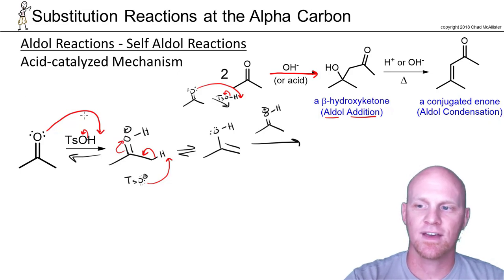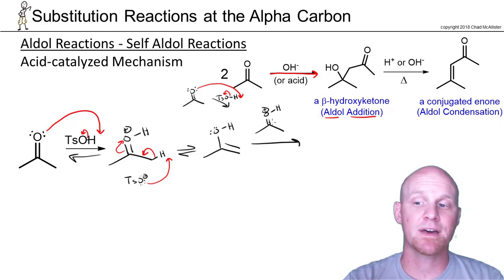It's the enol that actually attacks this protonated ketone, which is a much better electrophile. I mentioned this earlier, but the enol is not a good enough nucleophile to react with a ketone by itself. But protonate that ketone, make it much more reactive as an electrophile, and now the enol can come in and react.